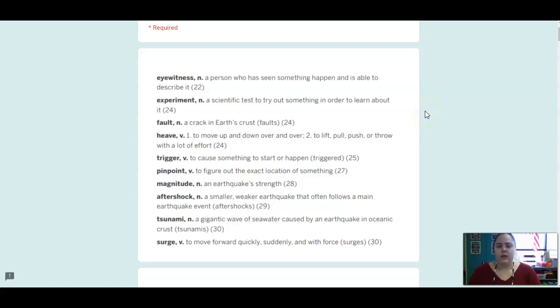So here's some vocab for you. An eyewitness is a noun, and it's a person who has seen something happen and can describe it. So they were there, they witnessed it. Experiment is a noun. We know what that is, a scientific test to try something out.